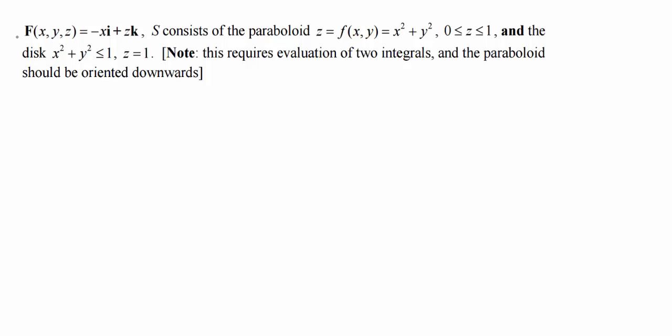Okay, we are evaluating the flux integral where the vector field has components negative x, zero, and z. The j component is zero. S consists of the paraboloid f of x equals x squared plus y squared for z between zero and one, and the disk x squared plus y squared is less than or equal to one at a height of one. This requires the evaluation of two integrals, and the paraboloid should be oriented downwards.